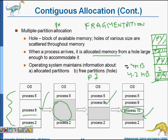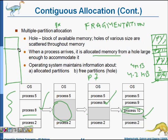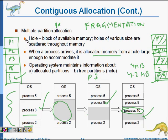One way to handle this is to reshuffle everything: allocate P1 here, make P2 contiguous, allocate P3 and P6, and then you have enough space. This reshuffling gives us enough space, but every process's base registers and address space will change as a result.